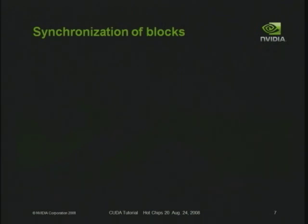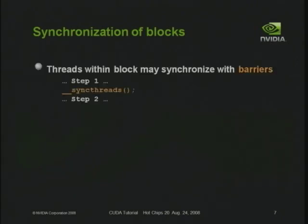A thread is essentially a virtualized sequential processor — it has its own program counter, registers, and processor state. When we say threads, we're not necessarily implying anything about how they're scheduled. On the GPU, all threads will be physical threads. On a multi-core compiler, they might be virtual — you might map an entire thread block onto a single physical thread. A thread block is basically a virtualized multi-processor, where by multi-processor I mean a processor that can execute many concurrent threads simultaneously.